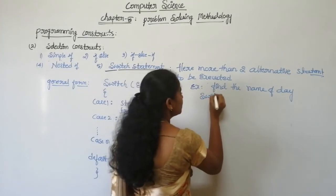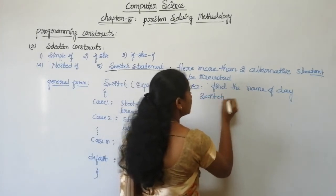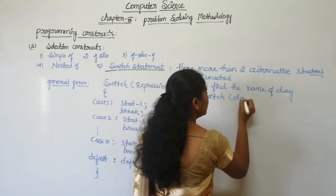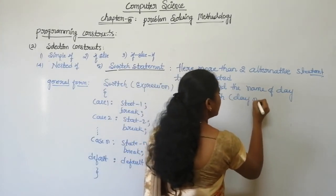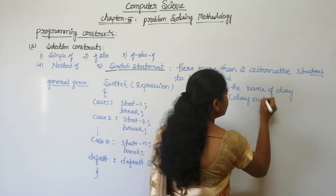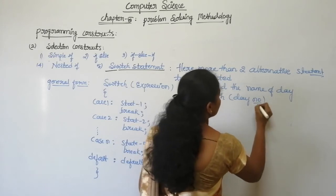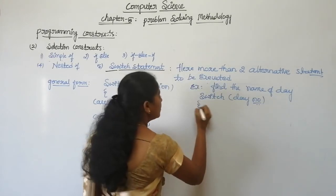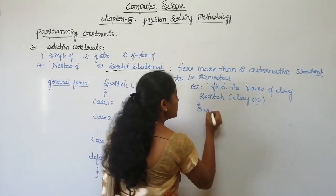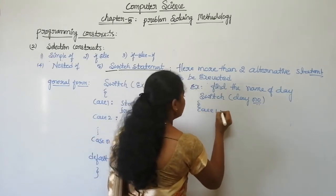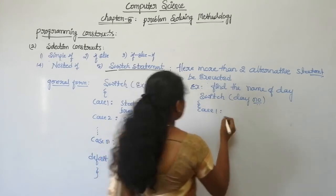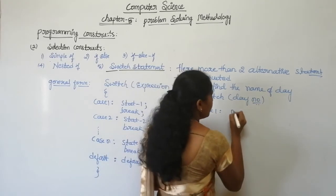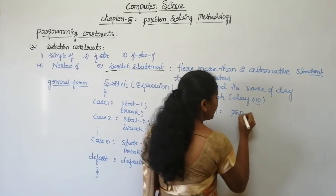In this example, switch on the variable day number. Case 1 — statement one means print Monday. Case 2 — print Tuesday. And so on through case 7 — print Saturday. If the day number does not match any case, the default statement executes — print 'not a valid day number'.